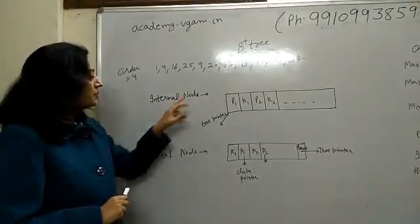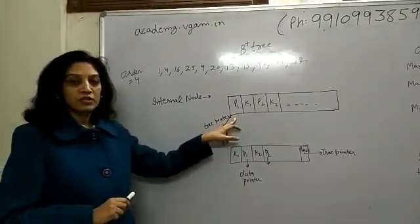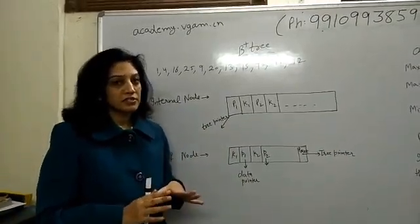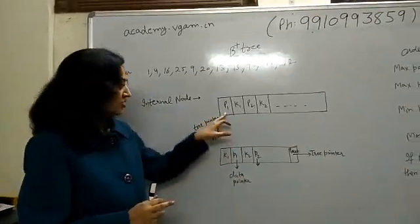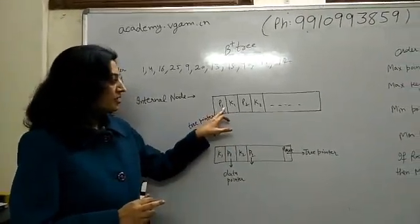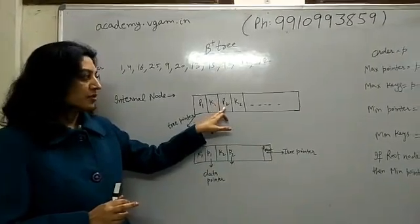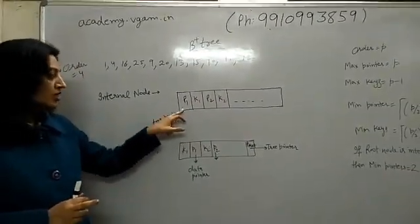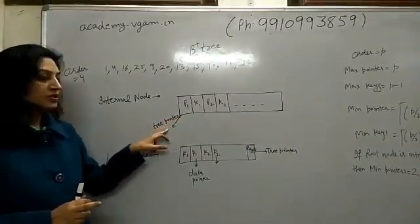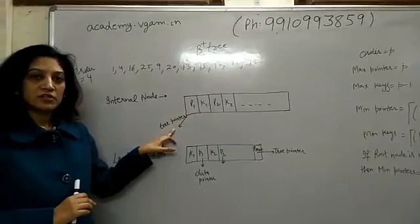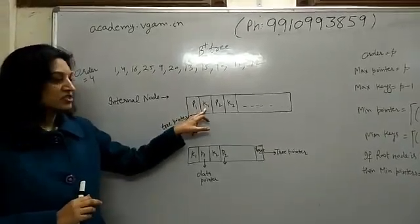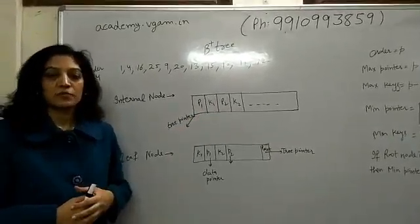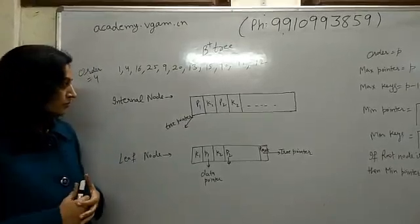So in B plus tree, this is the structure of the internal node. Here we have tree pointers and search keys. The tree pointer points to the next node, and the search key is the key based upon which we have to find the record.